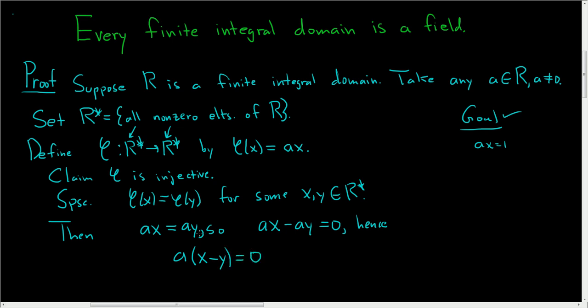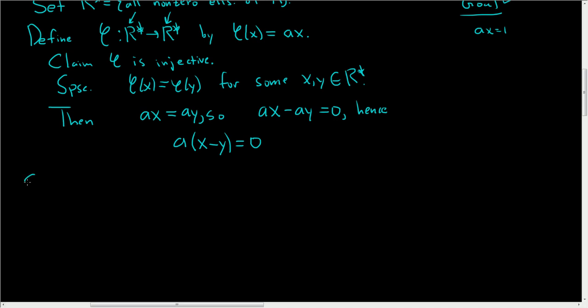Now here is the key step in the proof. Since R is an integral domain, we have either a equals zero or x minus y equals zero. It should be noted that a is in R star, which is in R. And also x minus y, x is in R, y is in R, so the difference is also in R.